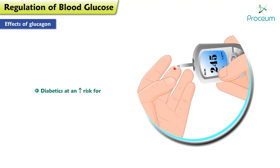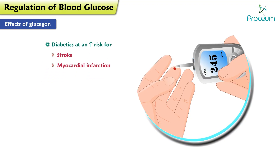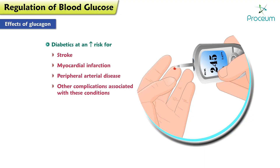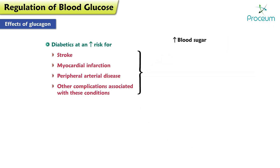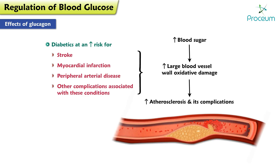Diabetics are at an increased risk of stroke, myocardial infarction, peripheral arterial disease, and other complications associated with these conditions, as increased blood sugar can cause increased large blood vessel wall oxidative damage, which leads to increased atherosclerosis and its complications.